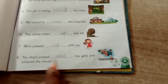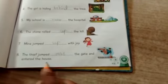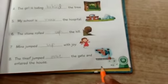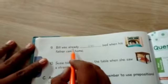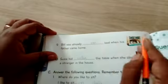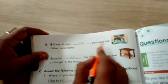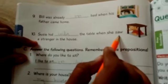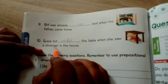The thief jumped over the gift and enter the house. Jump and enter the house. So next. Bill was already. Bill was already in the bed when his father came home. Susie did hit dash the table when she saw a stranger in the house. So we have to write the under the table.